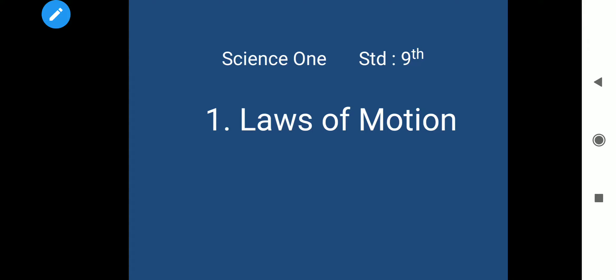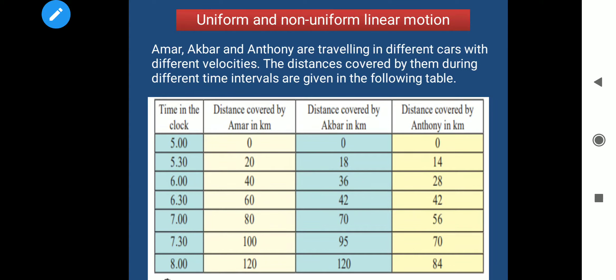Let's have an example which is given in your textbook. Amar, Agwar and Anthony are travelling in different cars with different velocities. The distance covered by them during different time intervals are given in the following table. The 1st column is time, 2nd column is distance covered by Amar in kilometres, 3rd column distance covered by Agwar in kilometres, and 4th column distance covered by Anthony in kilometres.